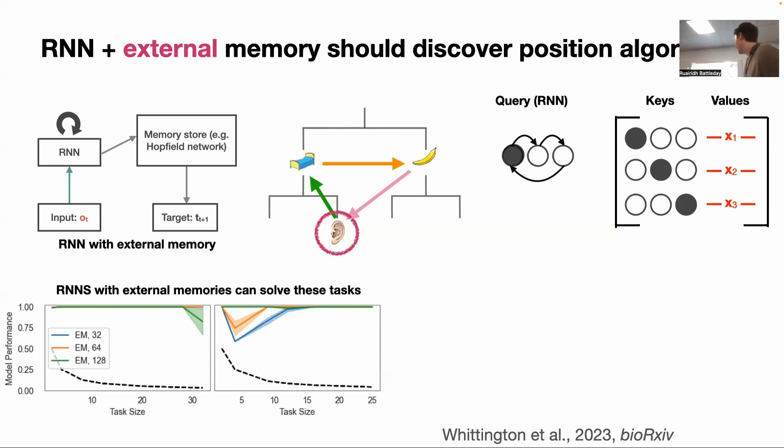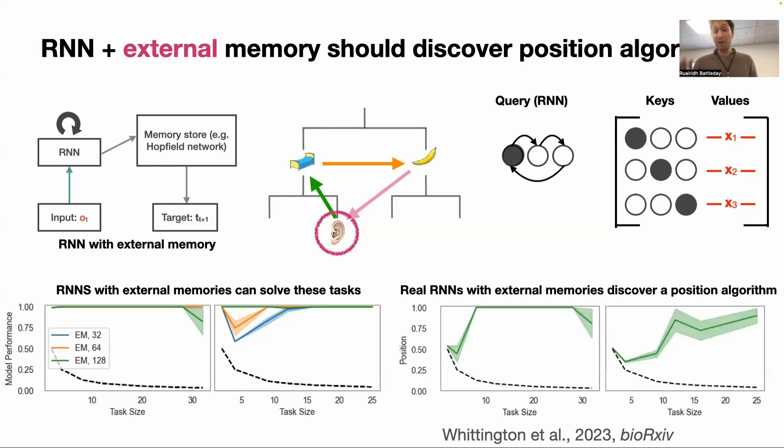That's the theory of what we expect we should find in this system, which is an RNN with a memory store. And that is really what exactly you do find. You find the RNN, the algorithm it uses is it encodes positions. It encodes positions in a way that's true across any different family, any different space, whatever it is. It just encodes the position. That's what's going on.